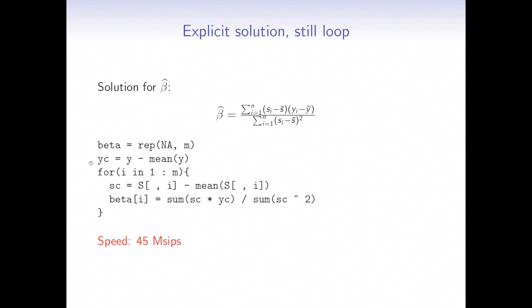So before the loop I centered response, because that stays the same. And here in the loop I center one SNP at a time and I solve the model and I measured the speed of 45 mega-sips, which is already another improvement.